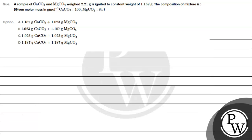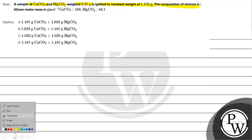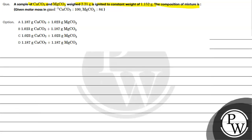Let's read this question. The question says: a sample of calcium carbonate and magnesium carbonate weighed 2.21 grams, and is ignited to a constant weight of 1.152 grams. The composition of the mixture is — options are given to us.